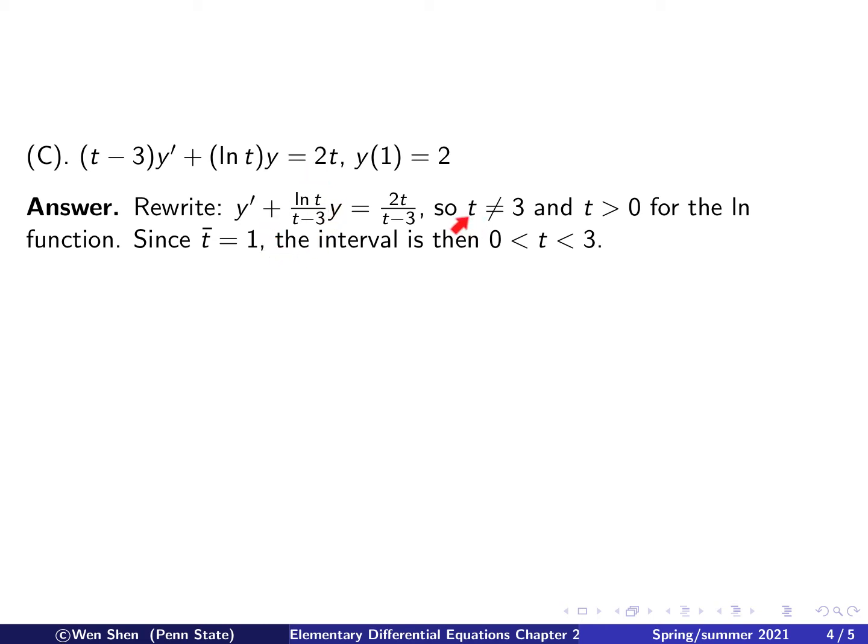For p(t) here, we see that t cannot be 3, because otherwise the denominator is 0. And furthermore, ln(t) requires t to be bigger than 0. So t has to be bigger than 0 and cannot be 3. Now let's look at the initial condition, which is given at t bar equals 1. From 1, if you go to the left, you cannot cross 0, so you stop there. And if you go to the right, increasing from 1, when you reach t equals 3, you cannot cross. Therefore, we conclude the interval is t between 0 and 3.